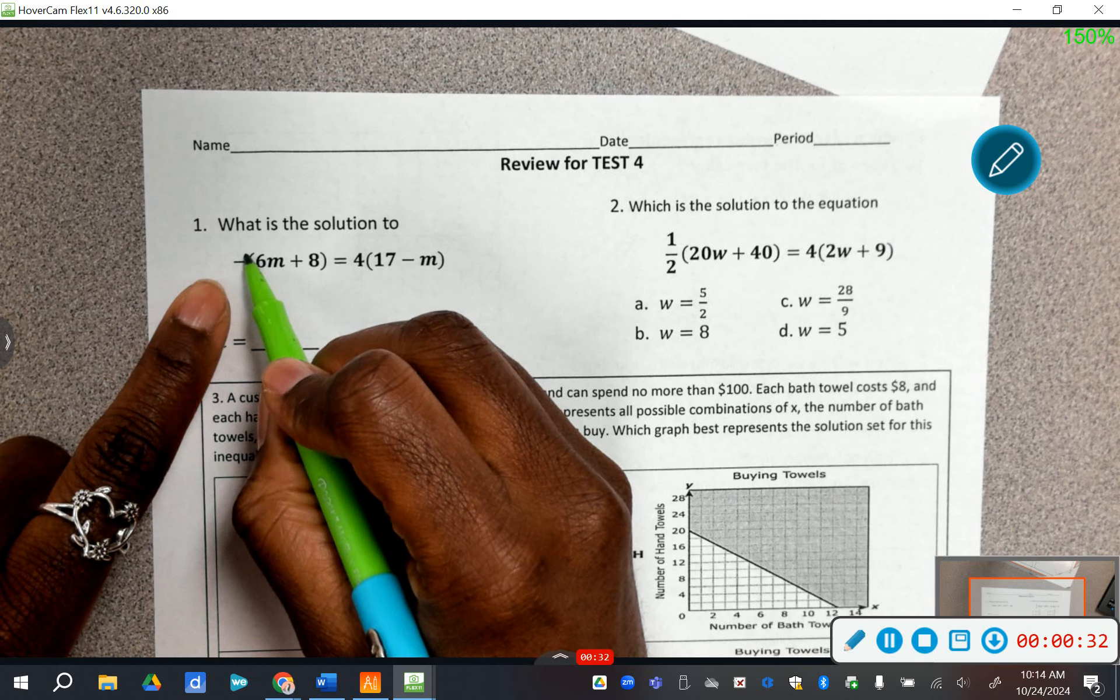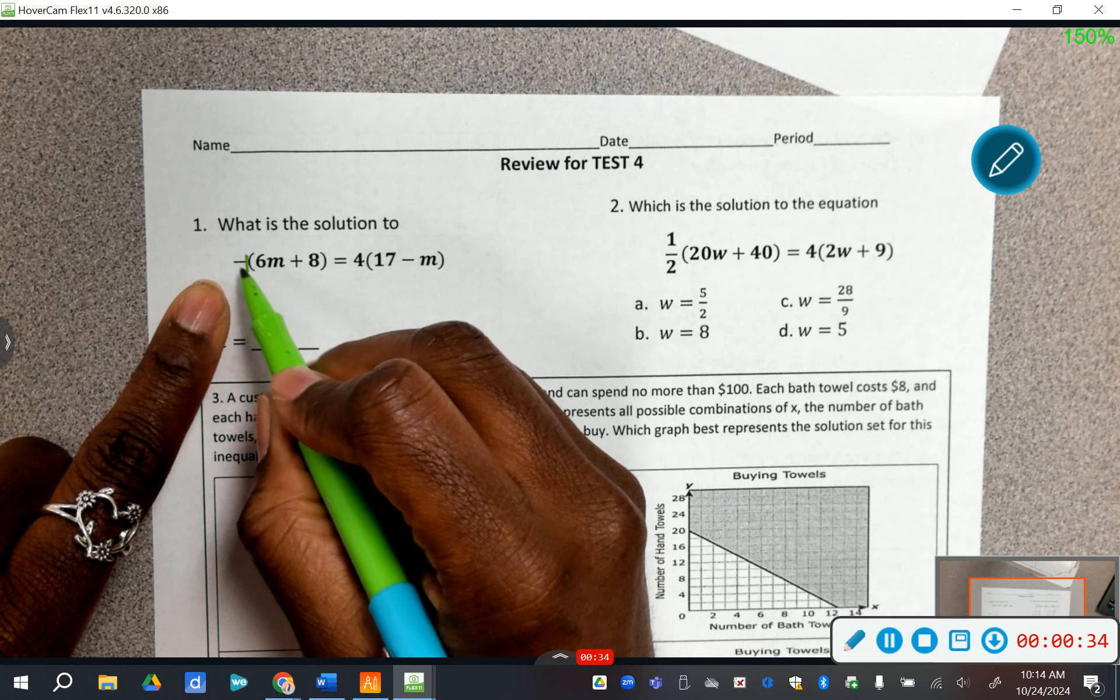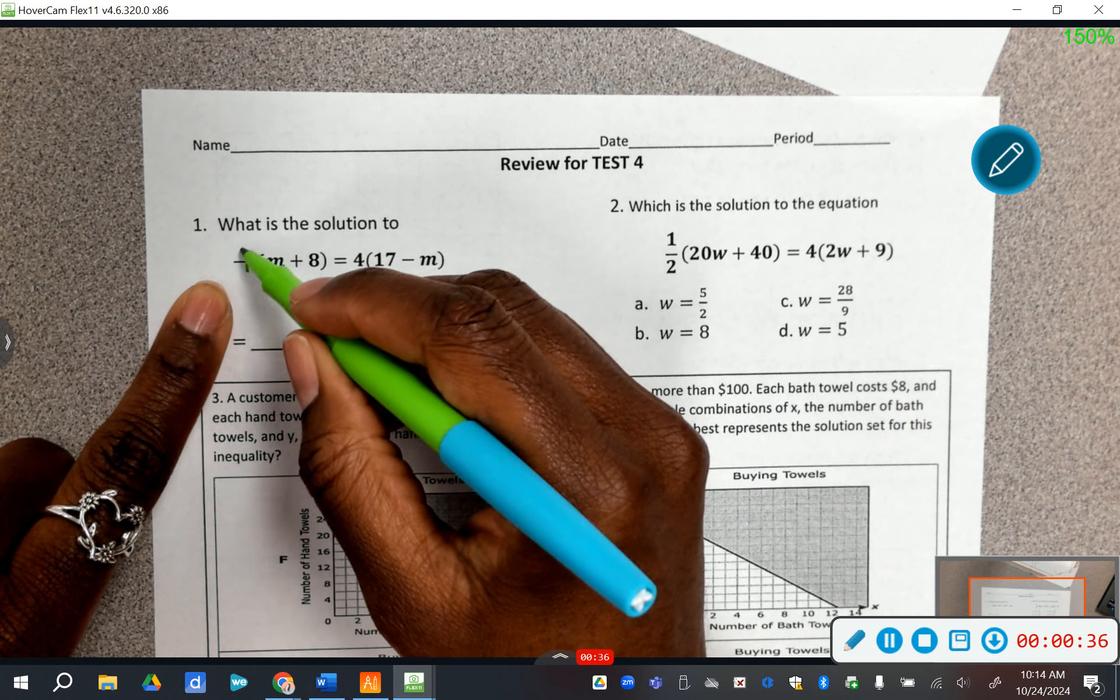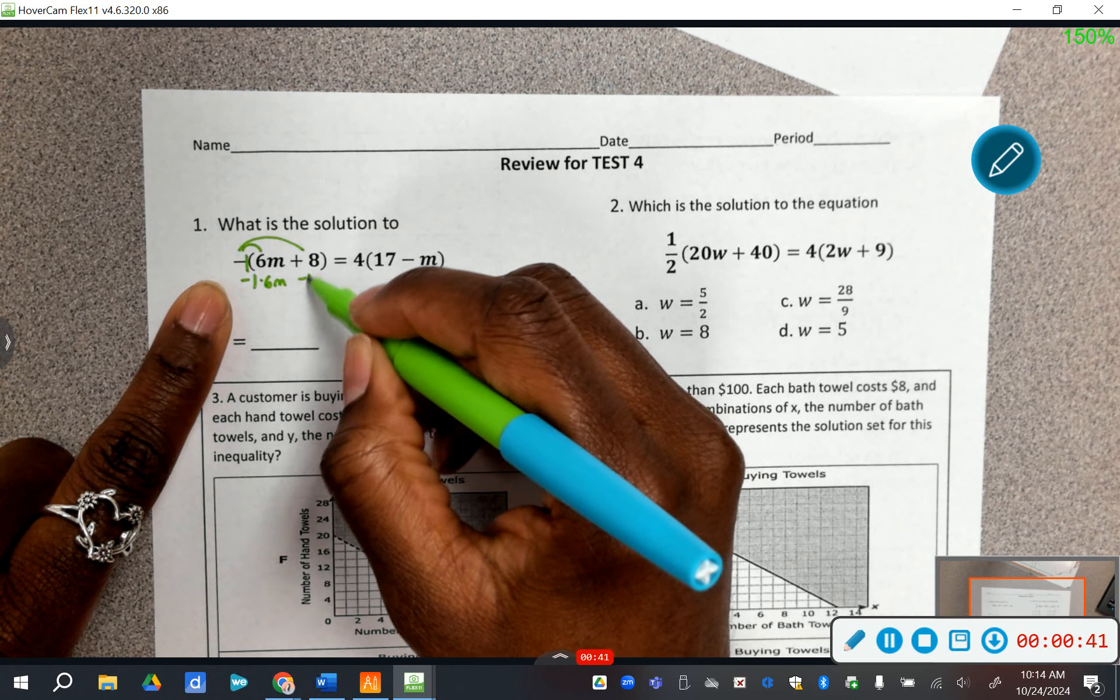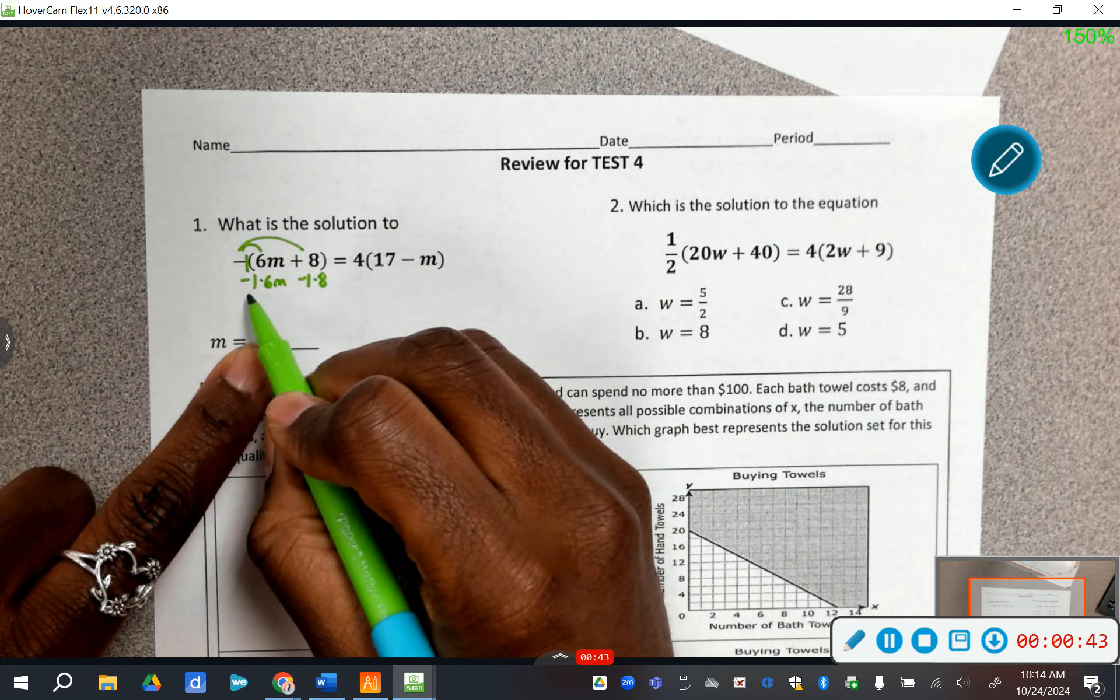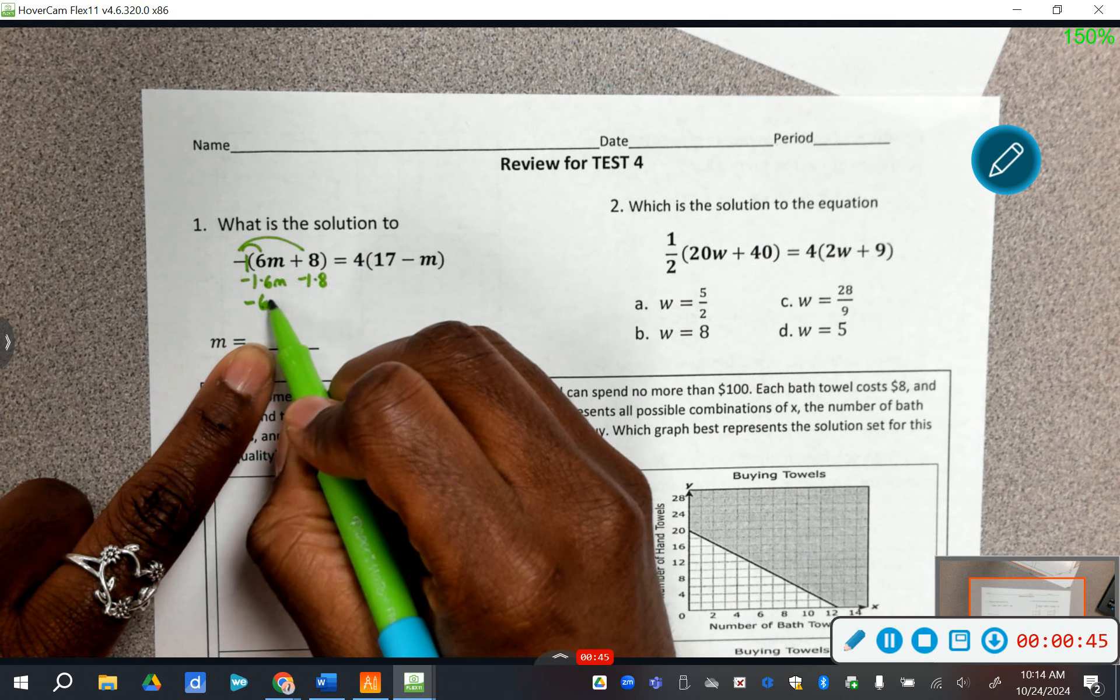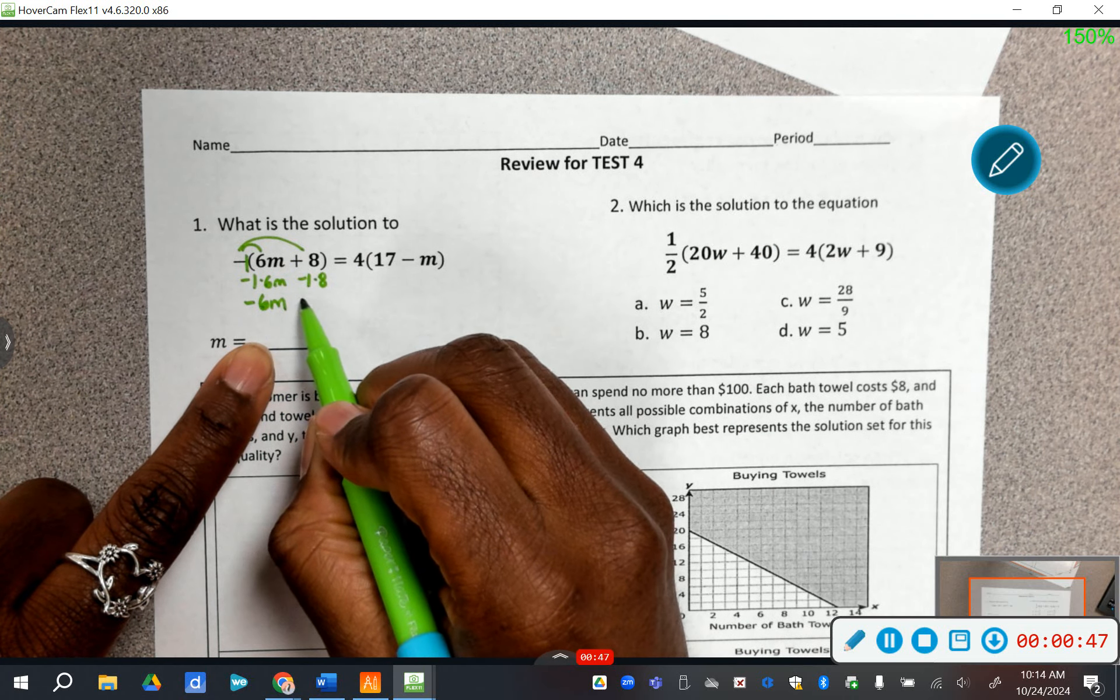And in this case, there's an invisible 1, which is negative 1 right here because of the minus sign. So this will be negative 1 times 6m and then negative 1 times 8. So in that case, that will give us a negative 6m and then a minus 8.